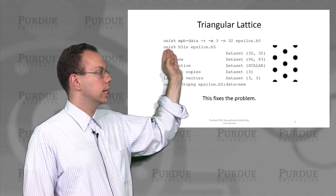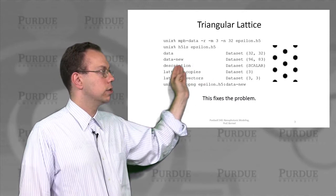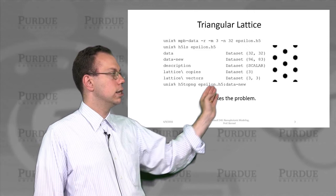On the epsilon.h5 creates a new data set called data new. And then if we run h5 to ping on the data new, then you actually see the output looks like this. And so it's a nice triangular lattice like we expected.